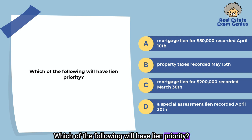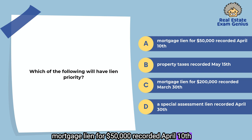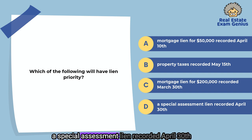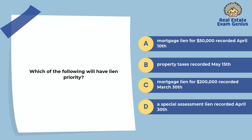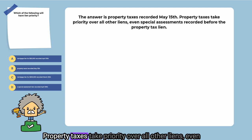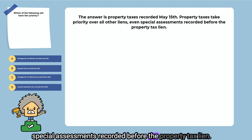Which of the following will have lien priority? A mortgage lien for $50,000 recorded April 10, property taxes recorded May 15, a mortgage lien for $200,000 recorded March 30, or a special assessment lien recorded April 30. The answer is property taxes recorded May 15. Property taxes take priority over all other liens, even special assessments recorded before the property tax lien.